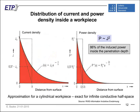Slide 12 shows the influence and dependence between current density and power density inside the body to be heated. This is the exact solution for an infinite conductive half-space, usable as an approximation for a cylindrical body. Because the power density depends on the square of the current density, about 86% of the induced power is induced inside the penetration depth. This can be influenced by the frequency — higher frequency for surface heating, for example for induction surface hardening, or lower frequency for through heating of the complete body.